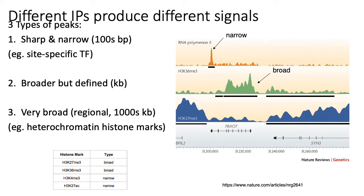The main point here is that when you do peak calling, you need to make sure the software you're using is calibrated for the right kind of peak. You wouldn't want to use a peak caller expecting very broad peaks when looking at transcription factor ChIP-seq data, or vice versa. The peak caller needs to know the general shape of peaks it should expect; otherwise it can really mess up in terms of calling false positives or false negatives.